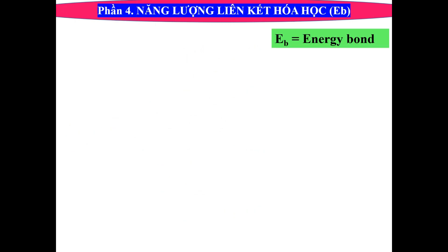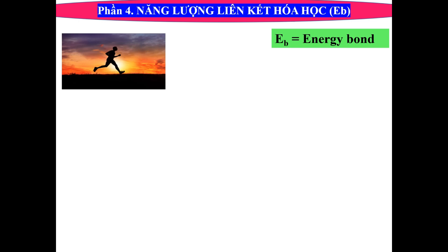Chúng ta nghiên cứu năng lượng liên kết hóa học là gì. Các em lưu ý thế này: chúng ta có năng lượng liên kết hóa học thì người ta ký hiệu là chữ EB, có nghĩa là Energy Bond. Đây chính là năng lượng liên kết hóa học.